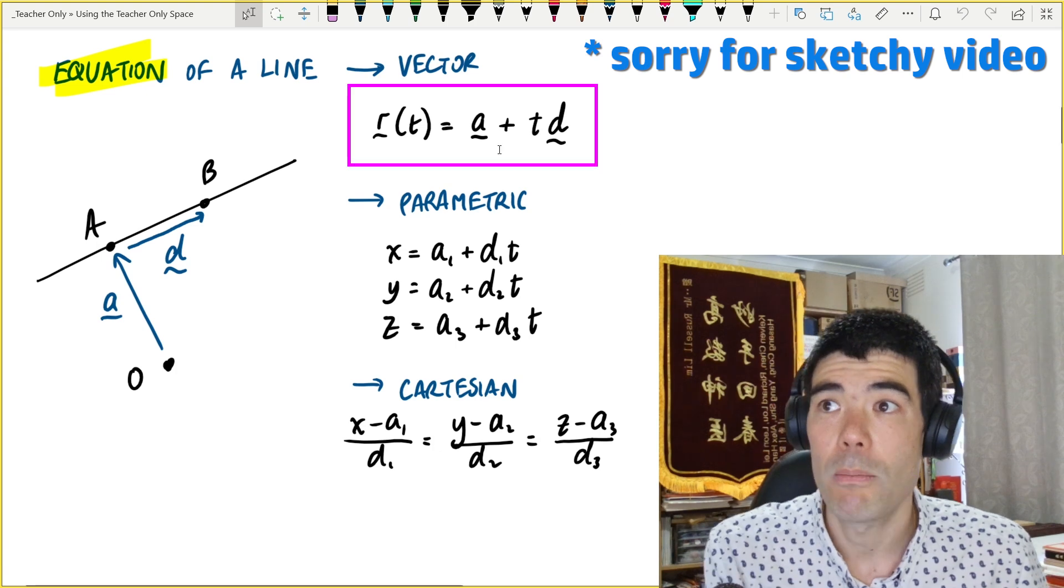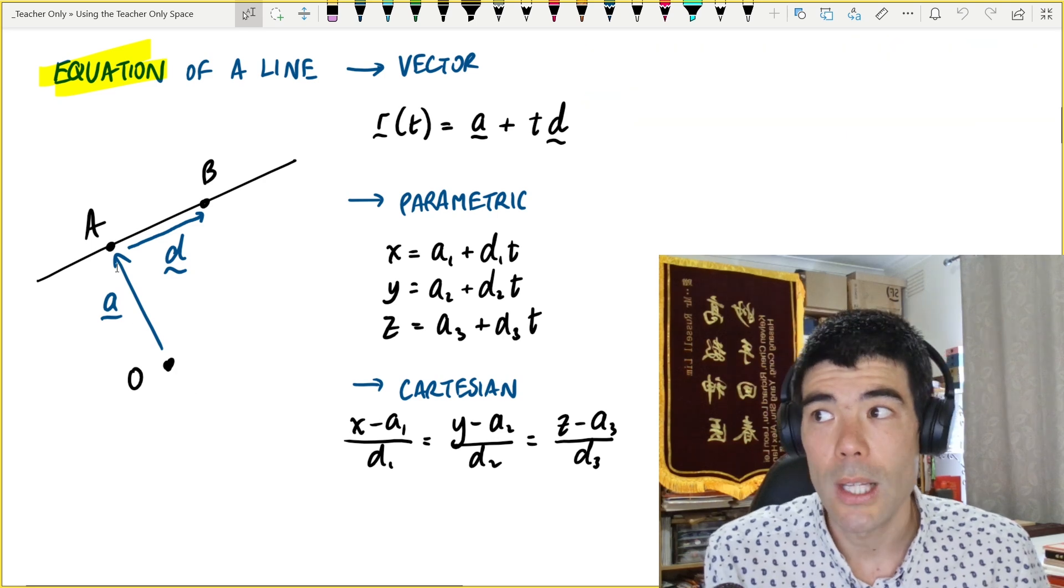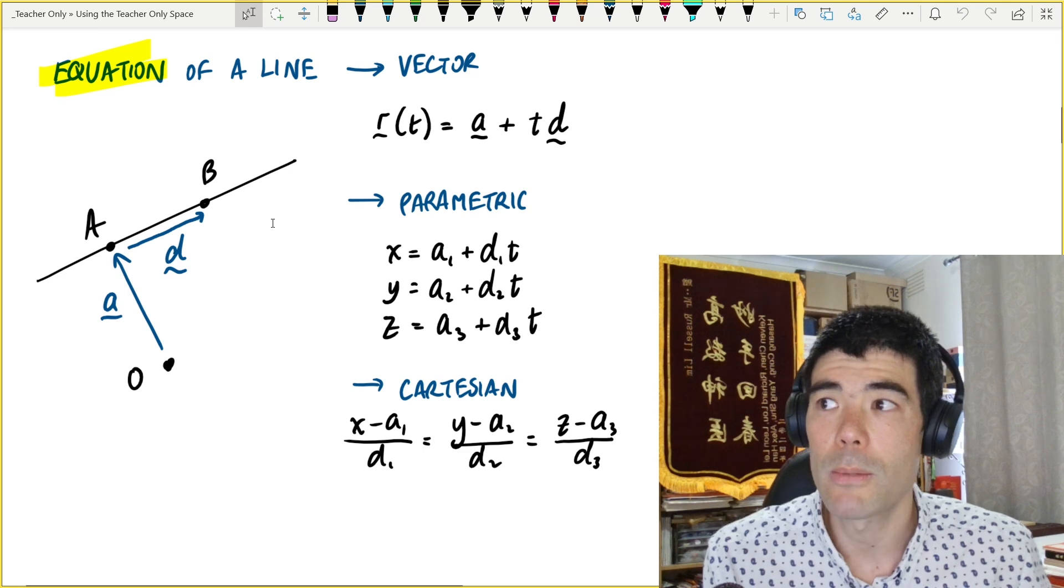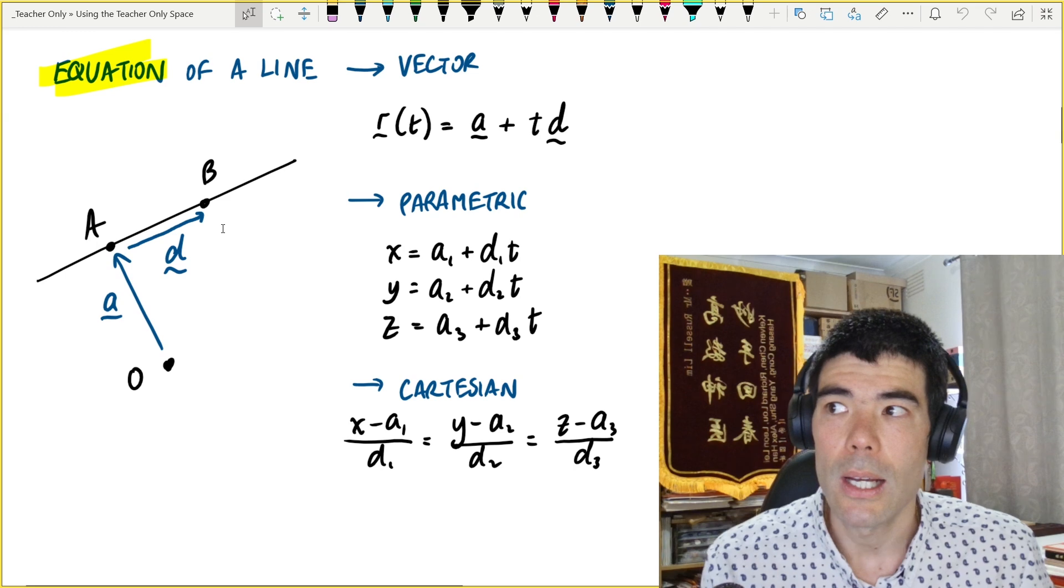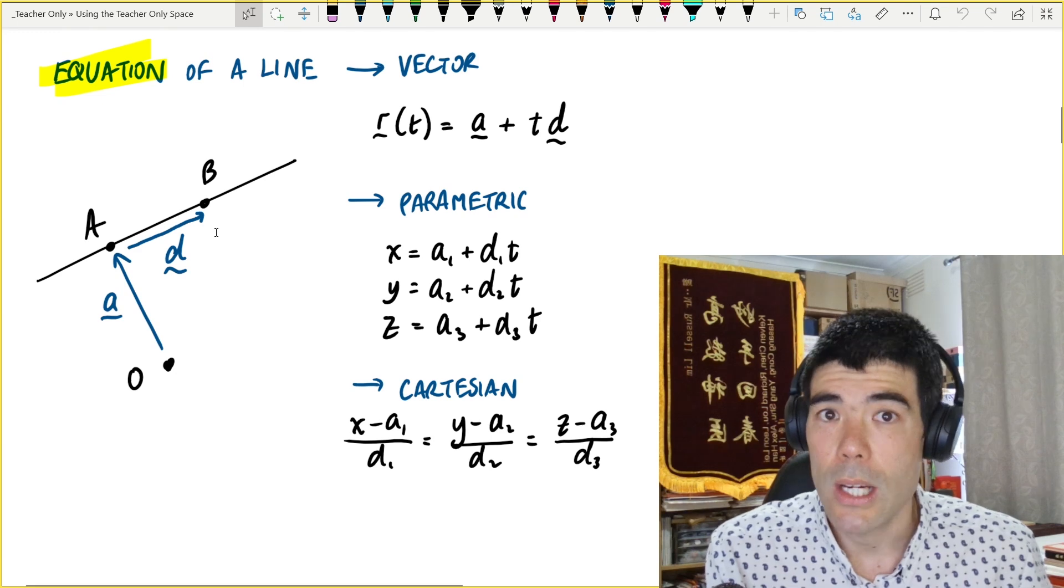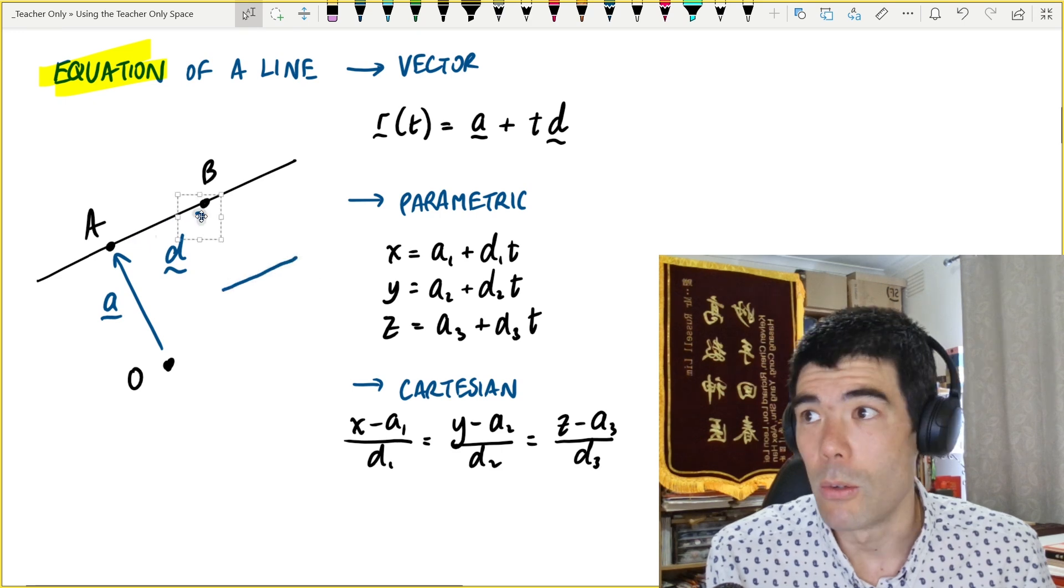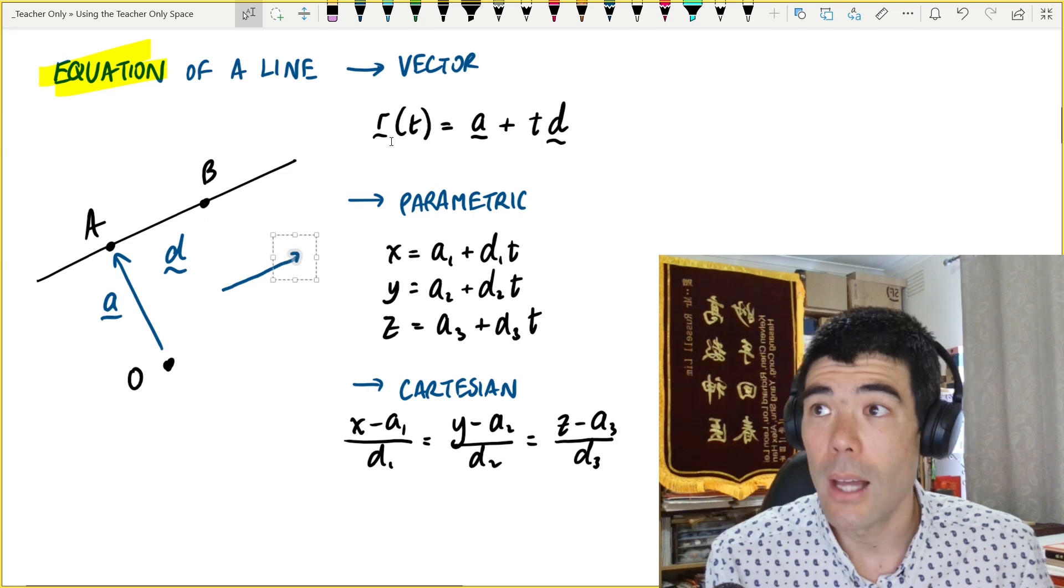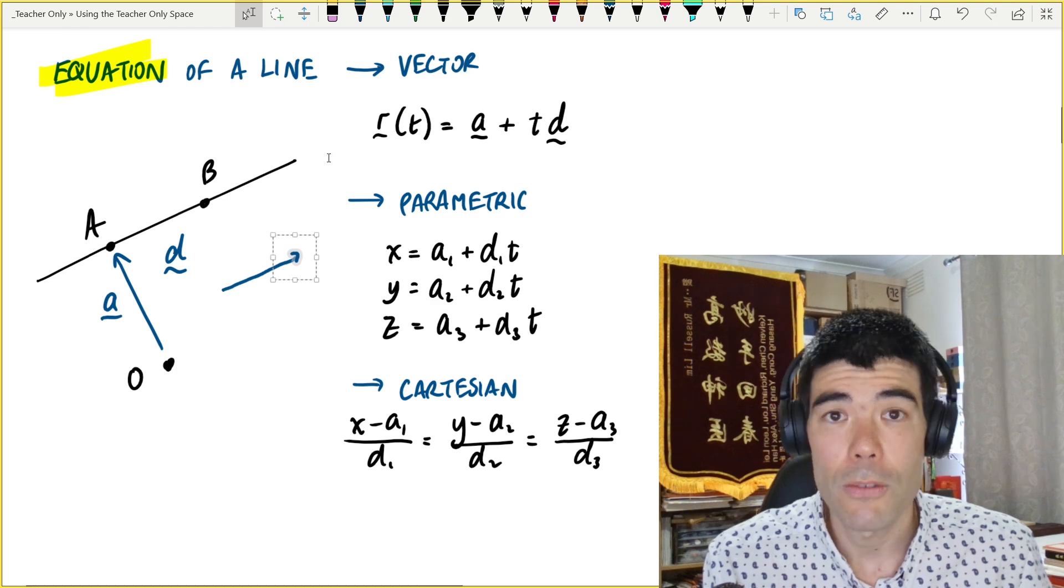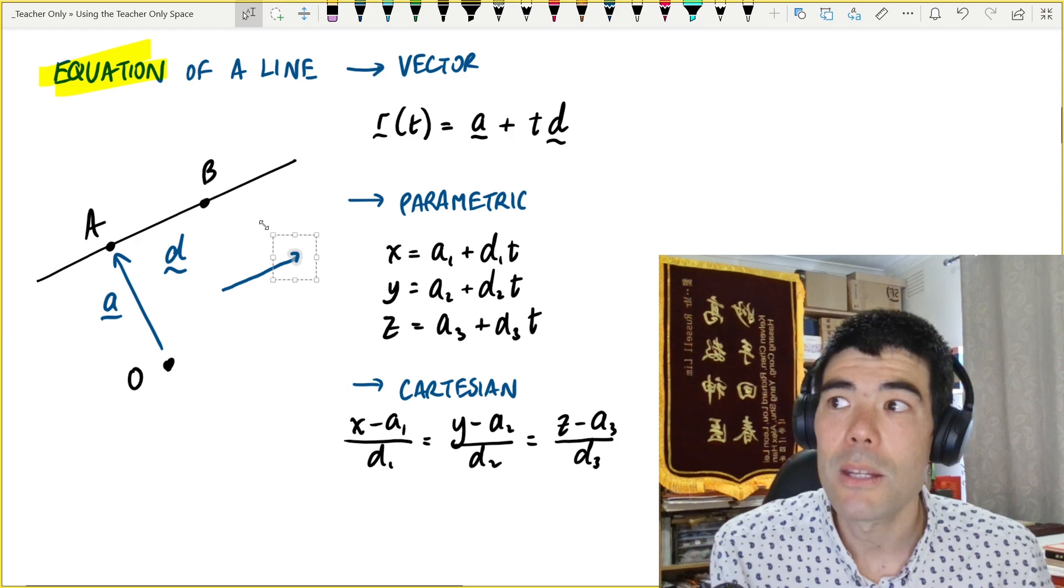And the vector form is like this, a vector a plus t times vector d. Where vector a is a vector from the origin to the line, that can be any point on the line. And vector d is a vector parallel to the line. Again, that can be any vector parallel to the line. But I also want to make clear the difference between the line here that this is defining and the vector d. So, students sometimes confuse the vector with the line, the vector parallel to the line. I mean, this vector d, so long as it has the same direction and same magnitude, would be the same no matter where in space that is. We could move this vector anywhere.